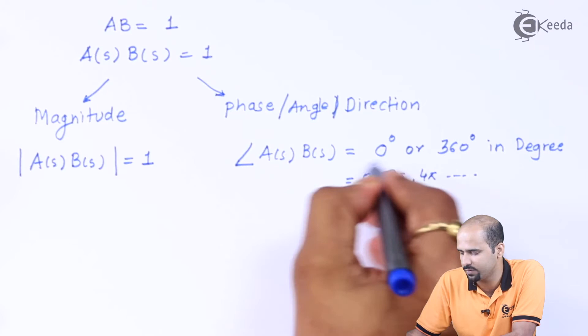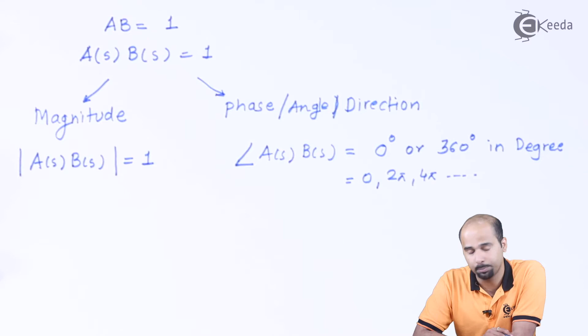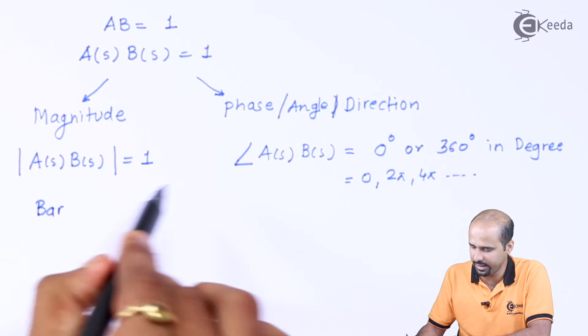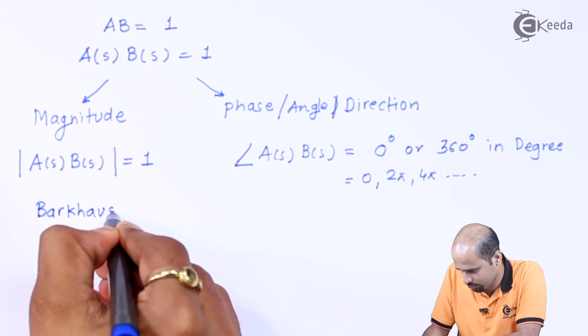These are two basis, two criteria and this is called as Barkhausen criteria. So as far as the exam is considered, so you have to formulate in this particular way and below that you have to write in a sentence what exactly Barkhausen criteria is. So I will write in a sentence, first criteria is for magnitude.